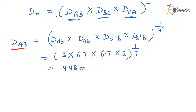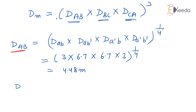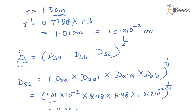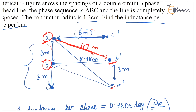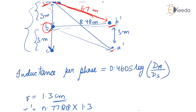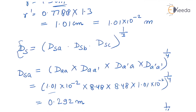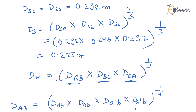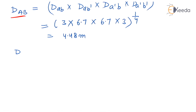Now we have to find Dbc. The distance between A to B and B to C is the same, so Dab equals Dbc equals 4.48 metres.